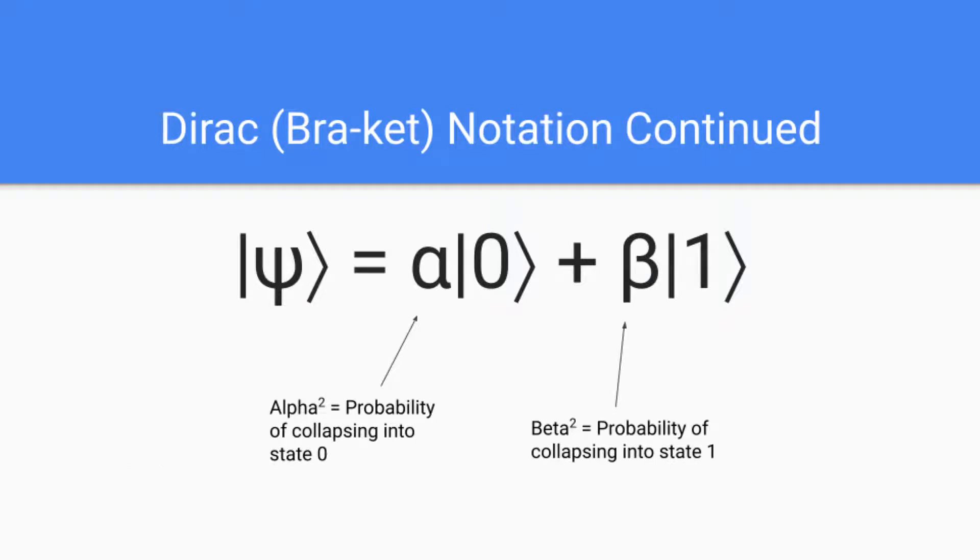Now let's talk about what alpha and beta mean in Dirac notation. Alpha squared is the probability of collapsing into state zero while beta squared is the probability of collapsing into state one. Qubits when they're measured in superposition have a probability of collapsing into each state. With just one qubit, you can only collapse into zero and one, and alpha and beta squared give you the probability of collapsing into zero and one respectively.